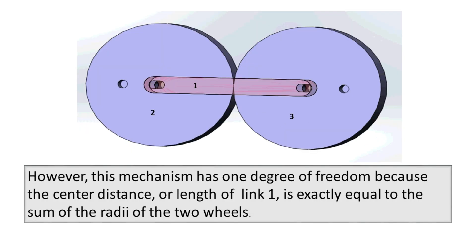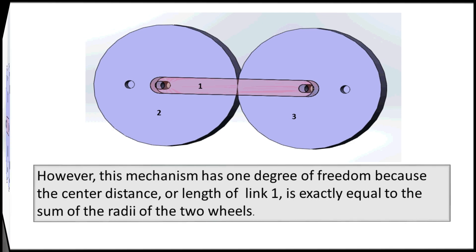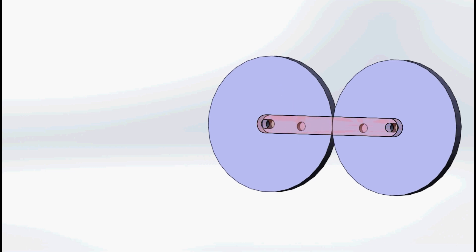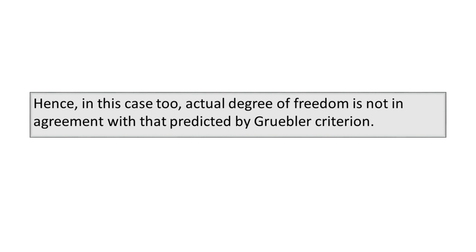However, this mechanism actually has one degree of freedom, because the center distance — or length of link 1 — is exactly equal to the sum of the radii of the two wheels. Hence, in this case too, the actual degree of freedom is not in agreement with that predicted by the Gruebler Criterion.